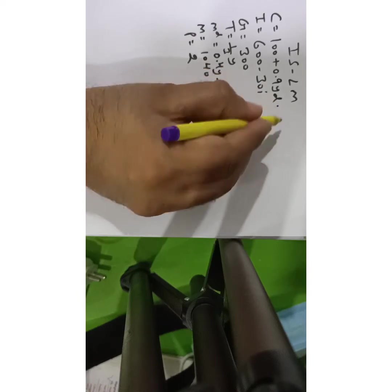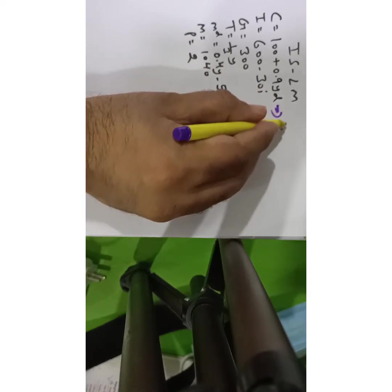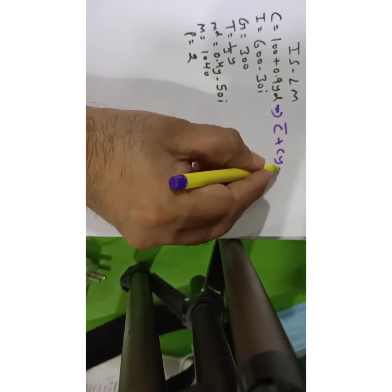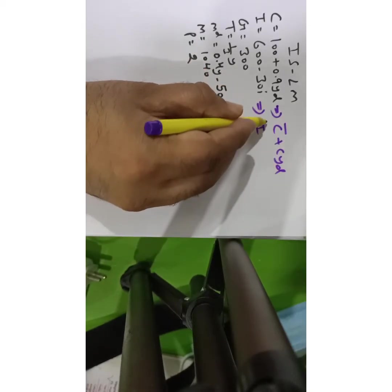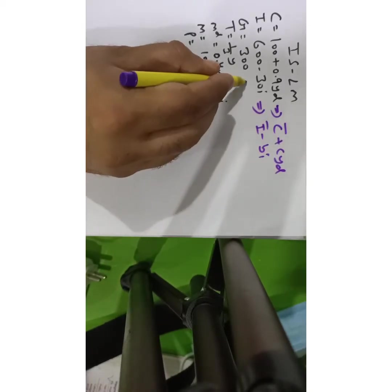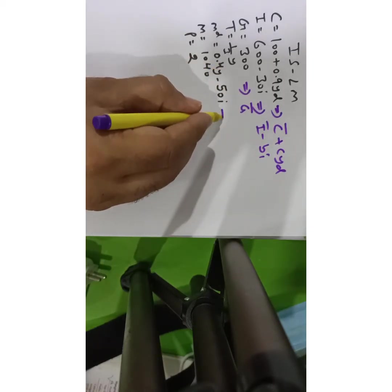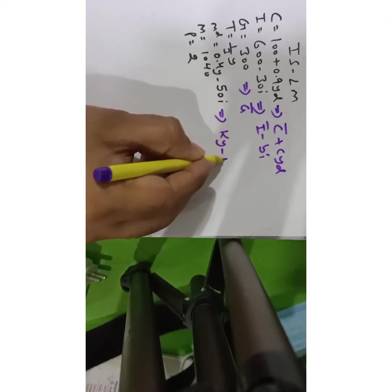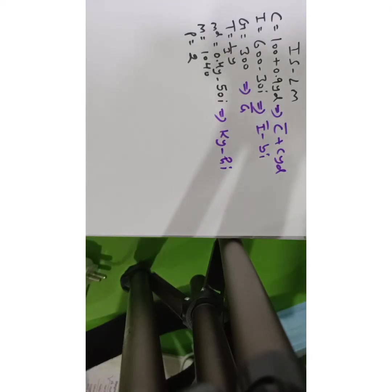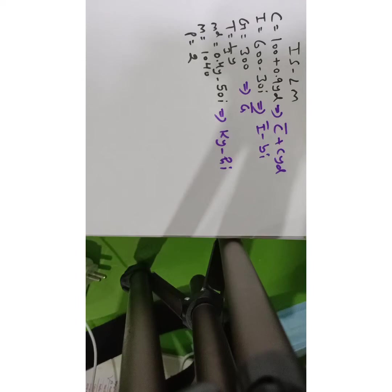C can be seen as C-bar plus C times Y_D. I can be seen as I-bar minus B times i. G can be seen as G-bar. This is just a proportional tax, which can be seen as K times Y minus H times i. So C as a function looks like C-bar plus C times Y_D, investment looks like I-bar minus B times i, G being autonomous is shown as G-bar, and MD is K times Y minus H times i.